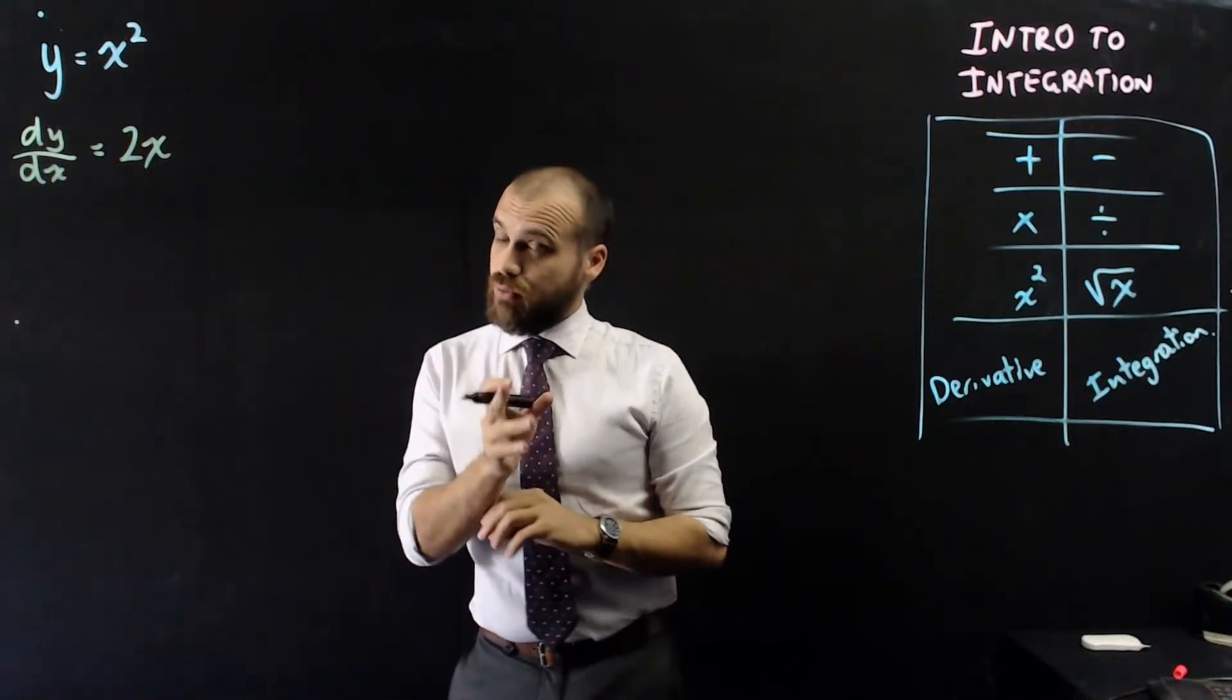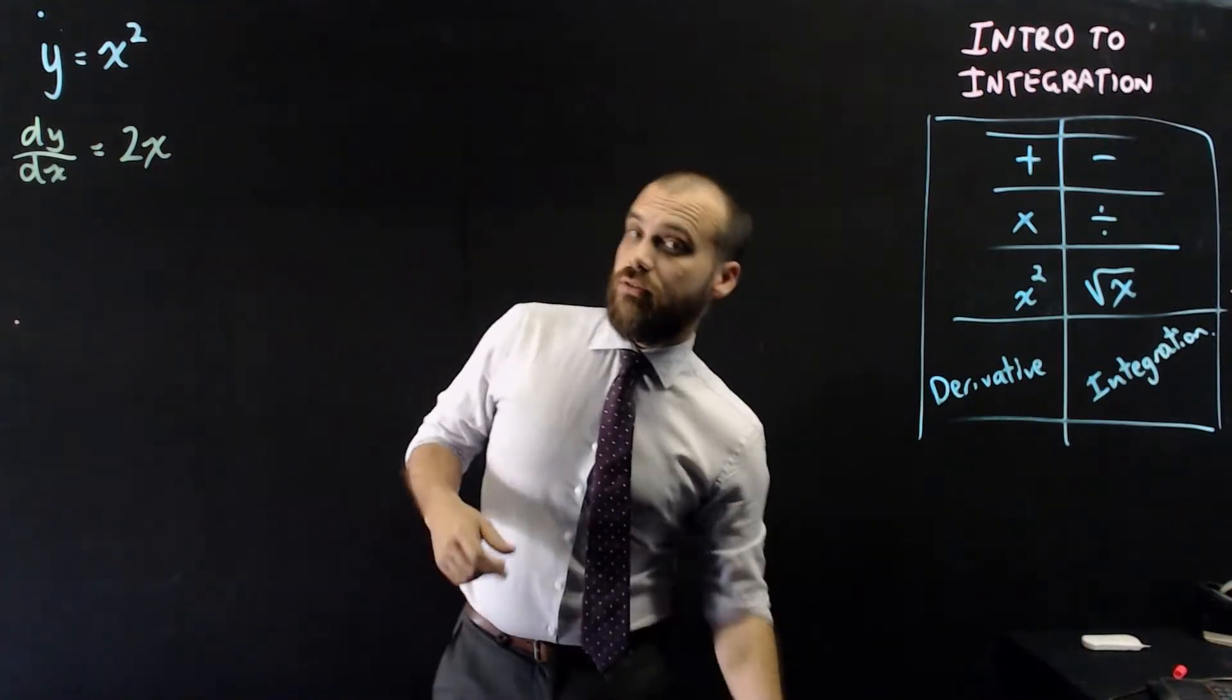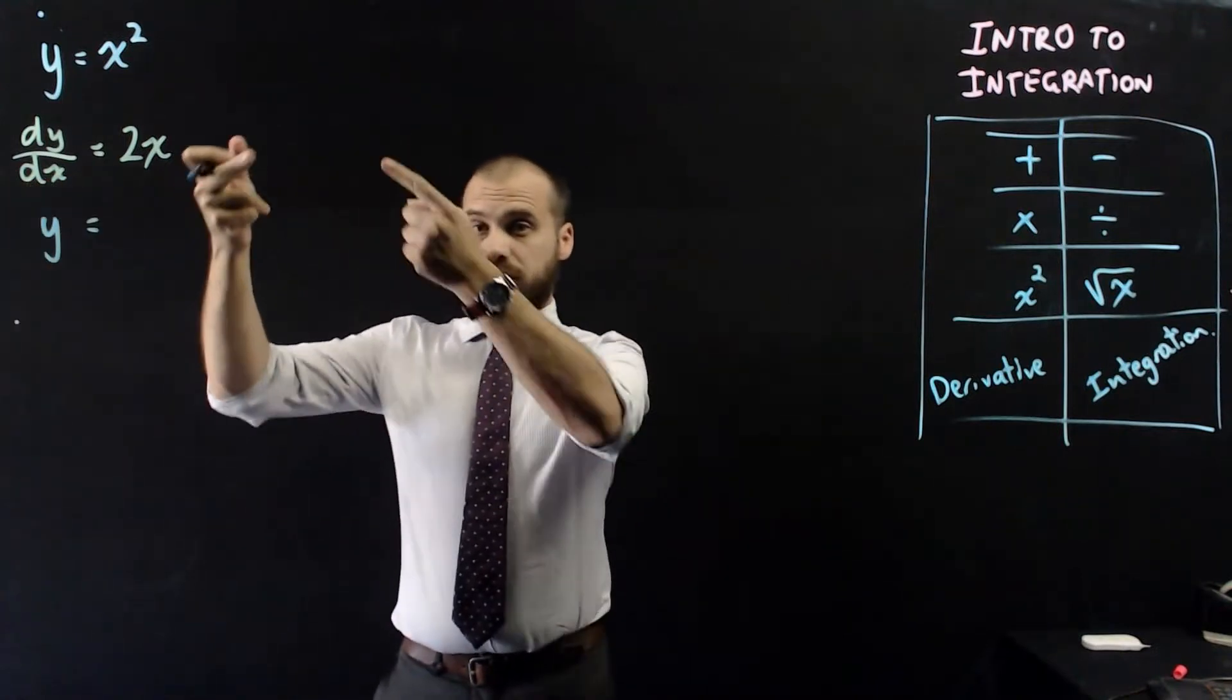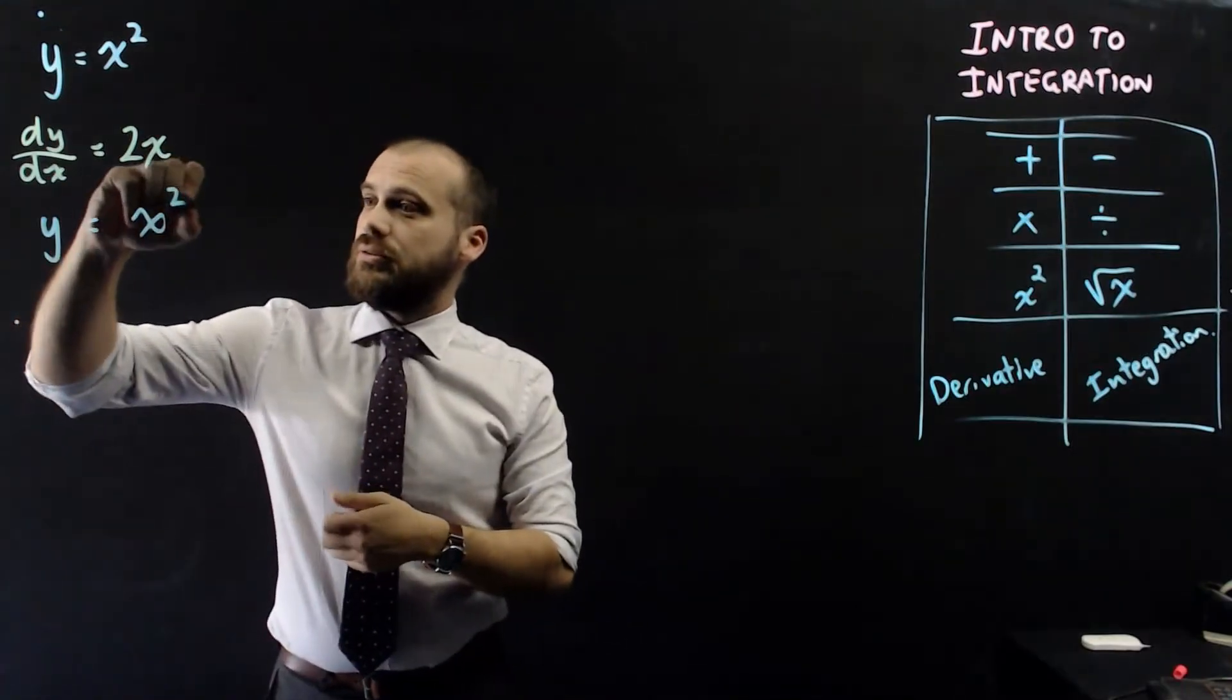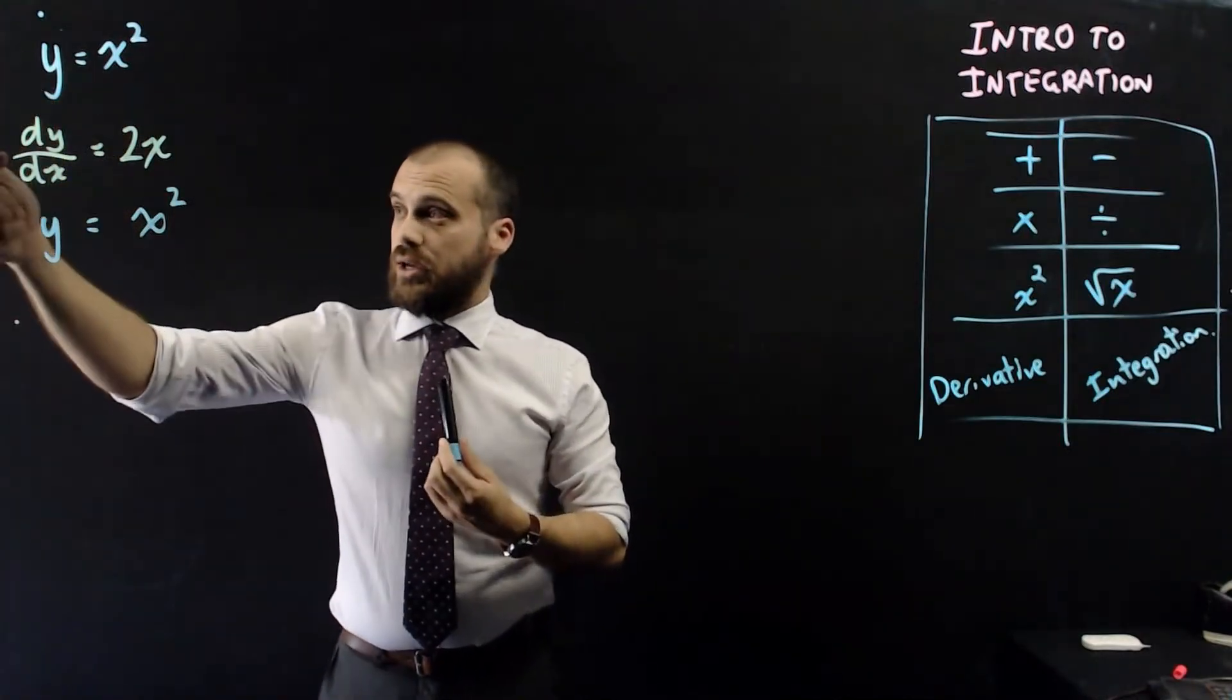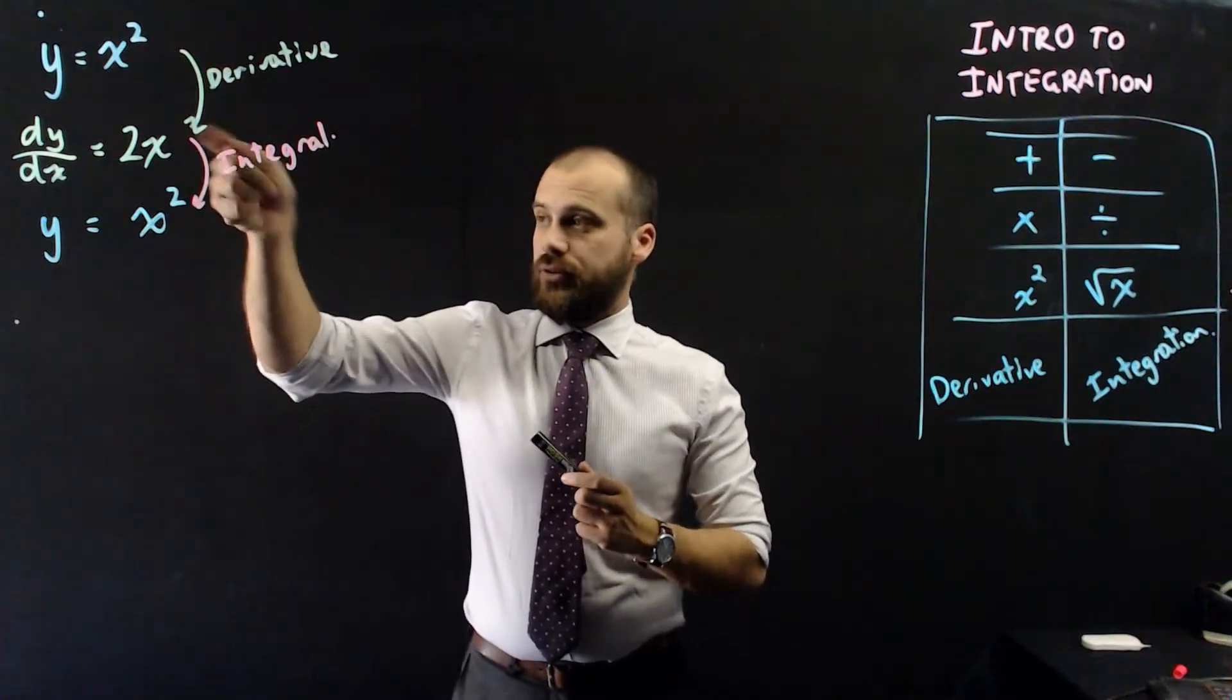Now, similarly, if someone said to you, dy dx is equal to 2x, find y. Now what you'd be doing is working backwards, and you'd be finding the integral. You'd be doing integration. And we can work backwards and forwards, backwards and forwards, backwards and forwards, doing derivatives to work that way, and integrals to work that way. Derivative, integral.